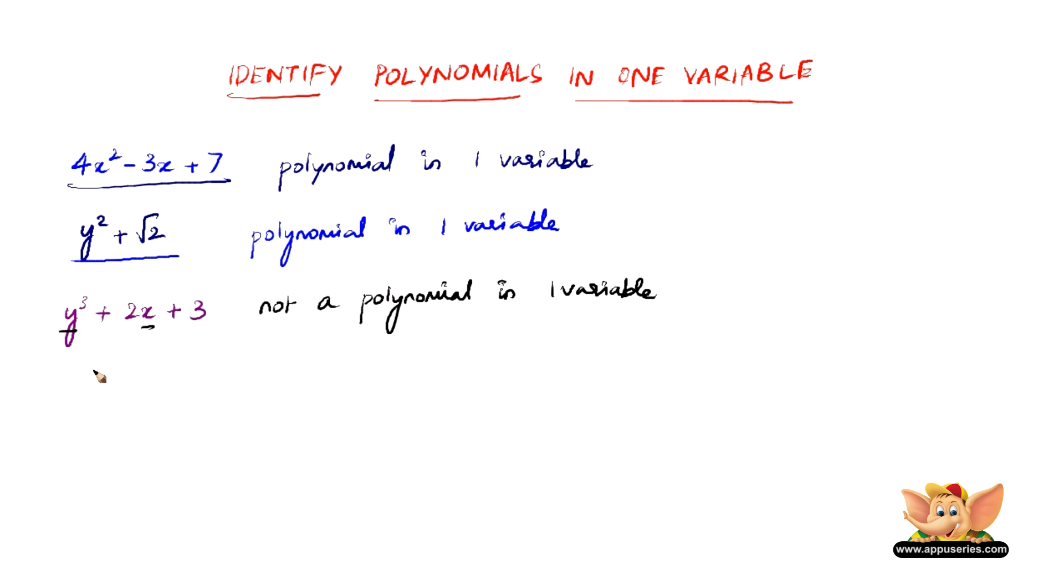Let us consider another example x¹⁰ + y³ + t⁵⁰. Now this definitely cannot be a polynomial in one variable because it has three variables: x, y, and t. Therefore, this is not a polynomial in one variable.